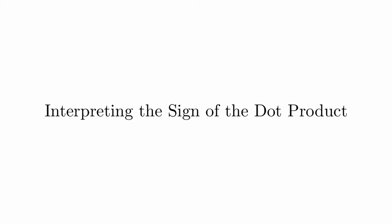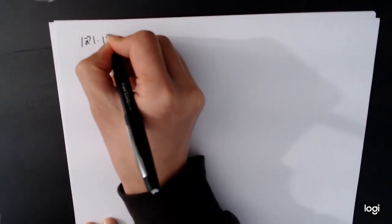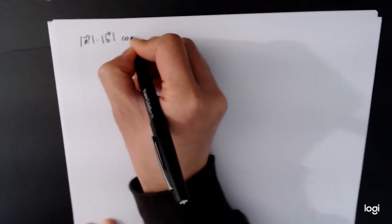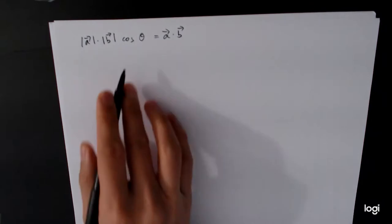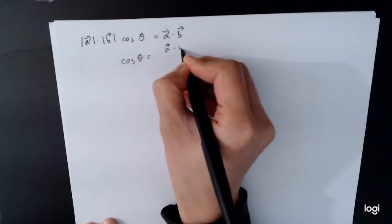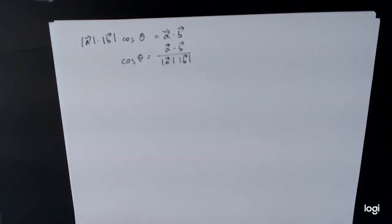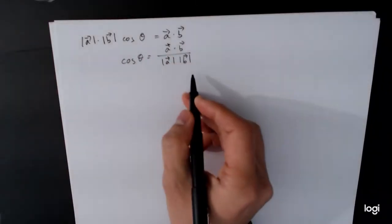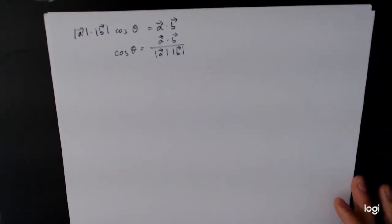An important feature of the dot product is our ability to get information about the angle between the vectors. Here's the geometric formula: the length of A times the length of V times cosine of the angle between them equals A dot V. From this, we can solve for cosine of theta: cosine theta equals A dot B divided by the length of A times the length of B. So we can explicitly calculate the angle between two vectors.